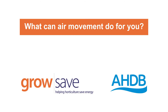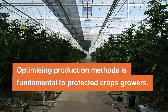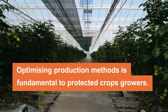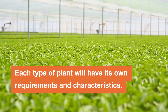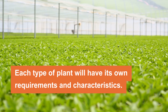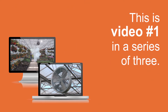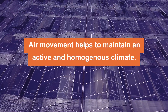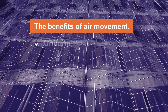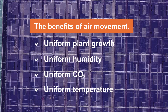What can air movements do for you? Optimizing production methods is fundamental to glasshouse growers. Determining what makes an optimal climate can be challenging — each type of plant will have its own requirements and characteristics. An important part of achieving that environment is air movement. In this video, the first in our air movement series, we look into the benefits of air movement. Air movement should be seen as a tool to help maintain an active and homogenous climate, leading to benefits including uniformity of plant growth, humidity, temperature, and CO2, as well as assisting transpiration.